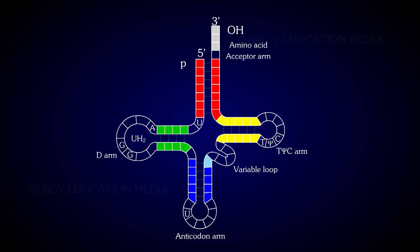There are three folds in the cloverleaf tRNA. It has four arms namely anticodon arm, D arm, TΨC arm and amino acid acceptor arm.